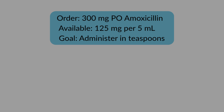Now let's try a liquid medication problem using teaspoons. The provider has ordered 300 milligrams of amoxicillin by mouth. What you have on hand is a liquid suspension that provides 125 milligrams per five milliliters. But here's the twist: the dose needs to be given in teaspoons, not milliliters. We're going to use that four-step structure again with this problem.